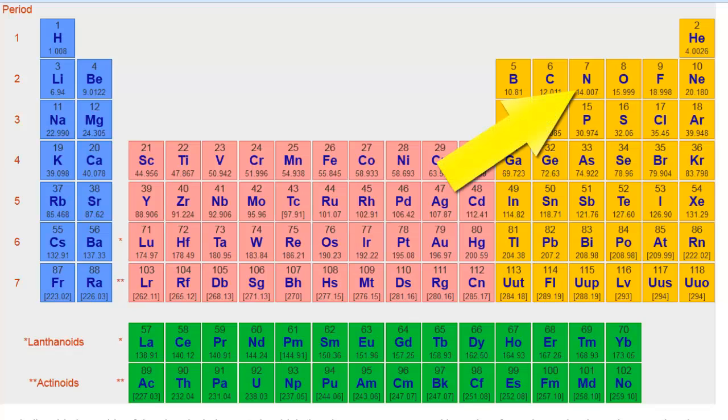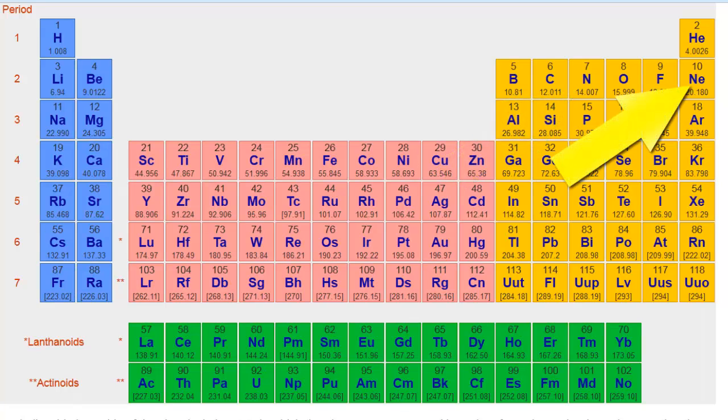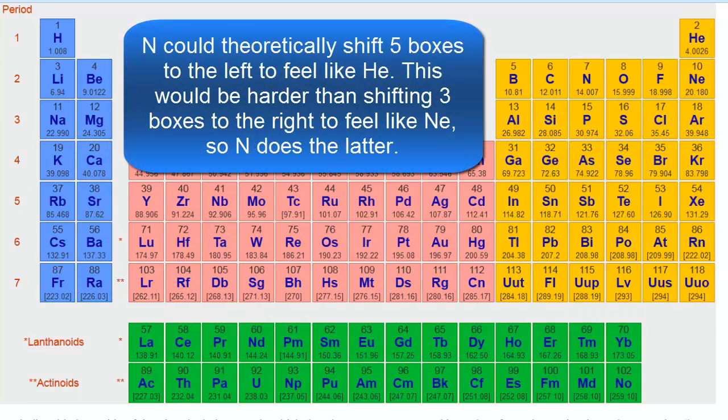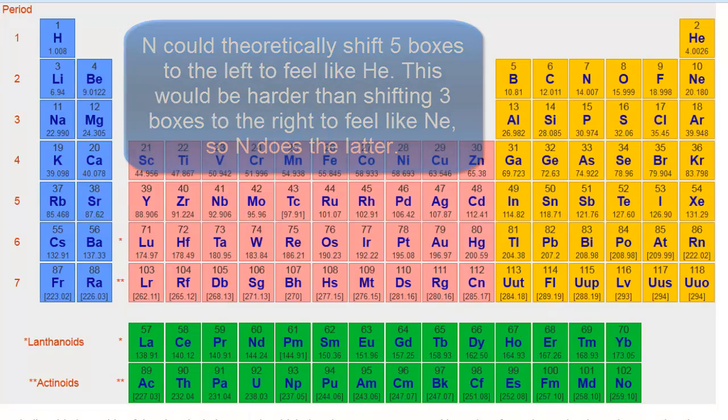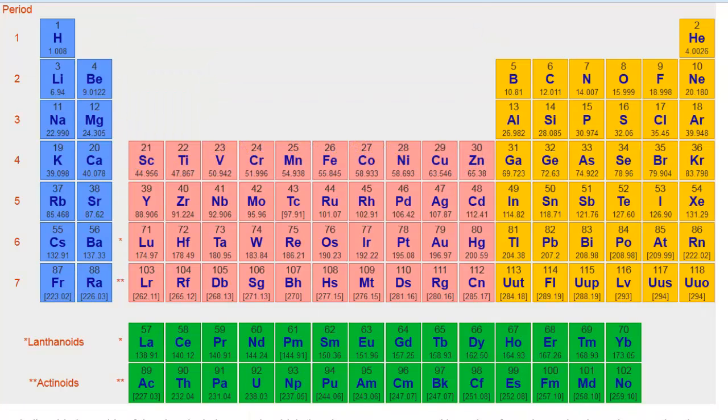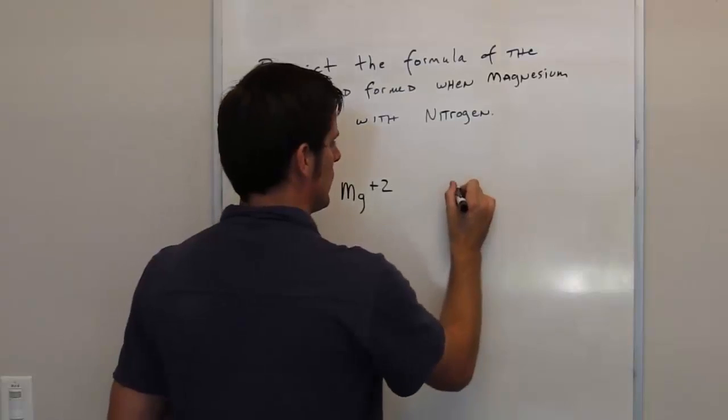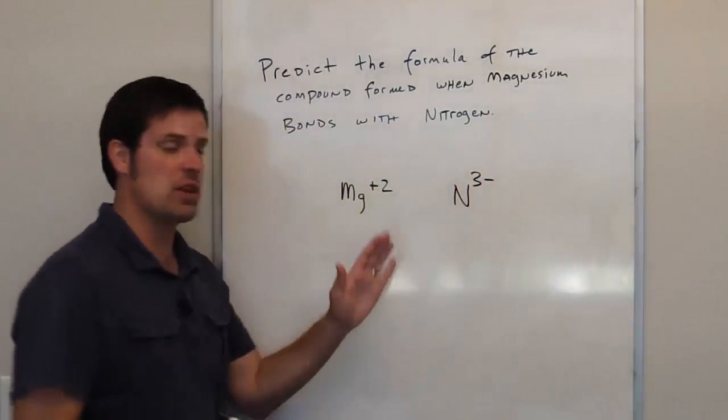Now let's look at nitrogen. Nitrogen, as you can see, is in column 5A of the periodic table. Its nearest noble gas neighbor is also neon, but it's not going to want to shift to the left. See, if it wants to shift to the left by losing electrons, it's going to have to lose five electrons to feel like helium. It'd be much easier to just gain some electrons shifting to the right to feel like neon. So nitrogen is going to gain three electrons in an ionic compound. So it's going to want to have a charge of N3 minus.